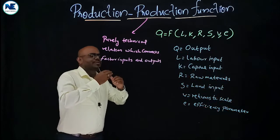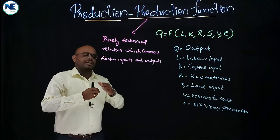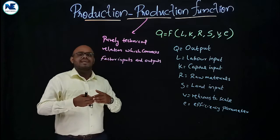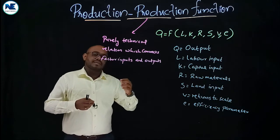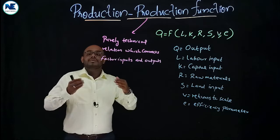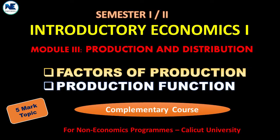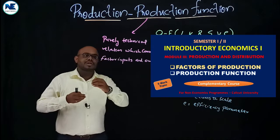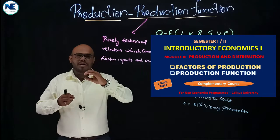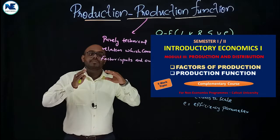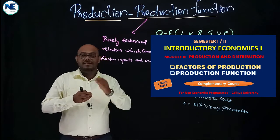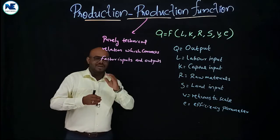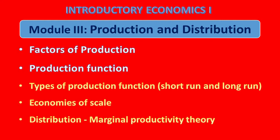First we will consider the meaning of production and what we mean by production function. We will also discuss the concepts associated with production — total product, average product, and marginal product — as well as the factors of production. We need to understand some relationships, like total product and marginal product, and average product and marginal product, with simple diagrams and interesting illustrations.